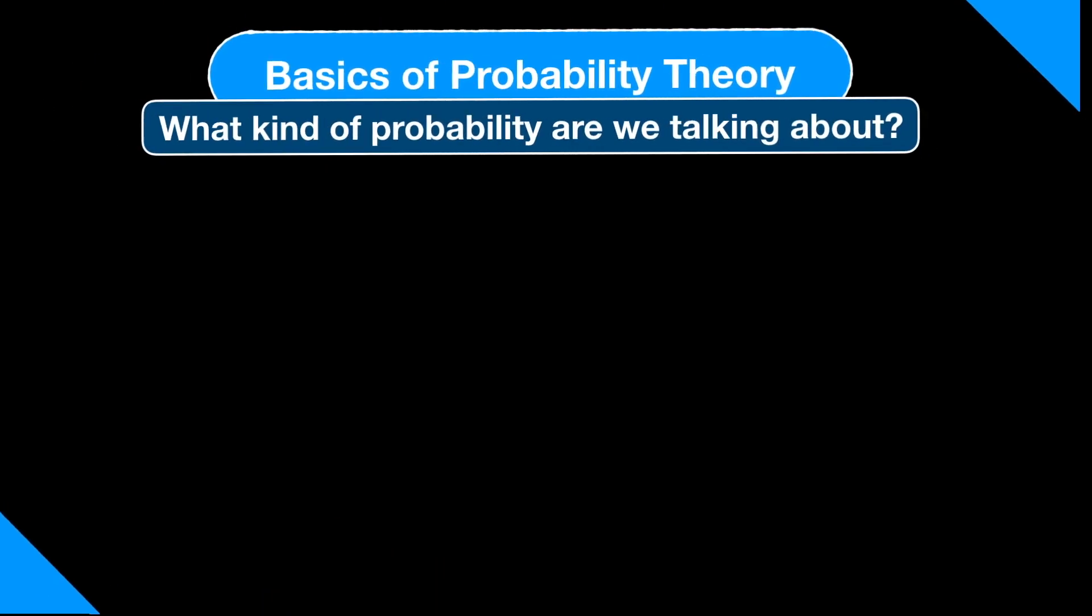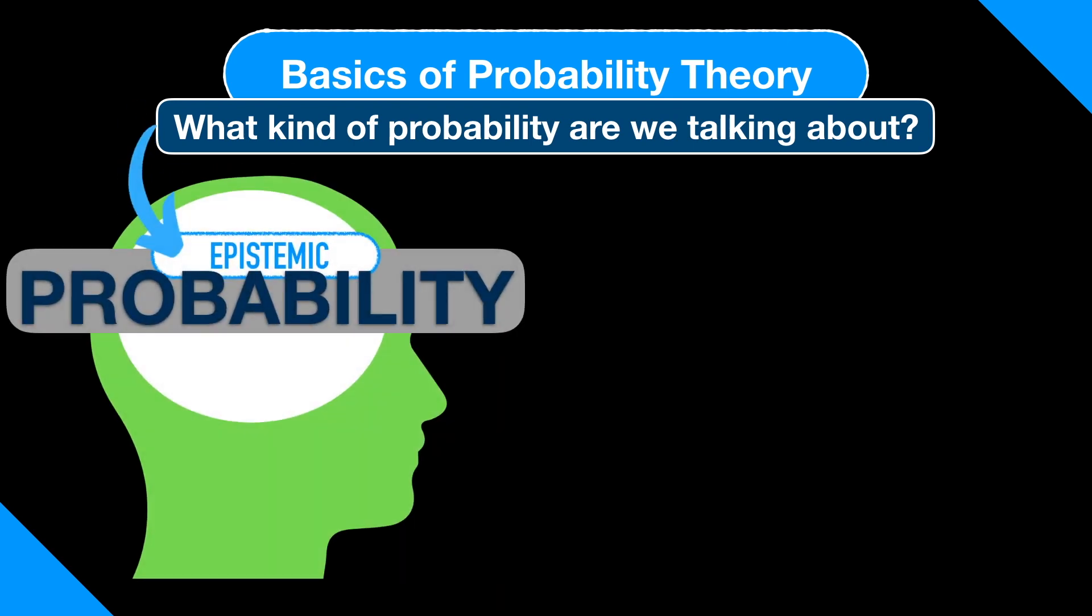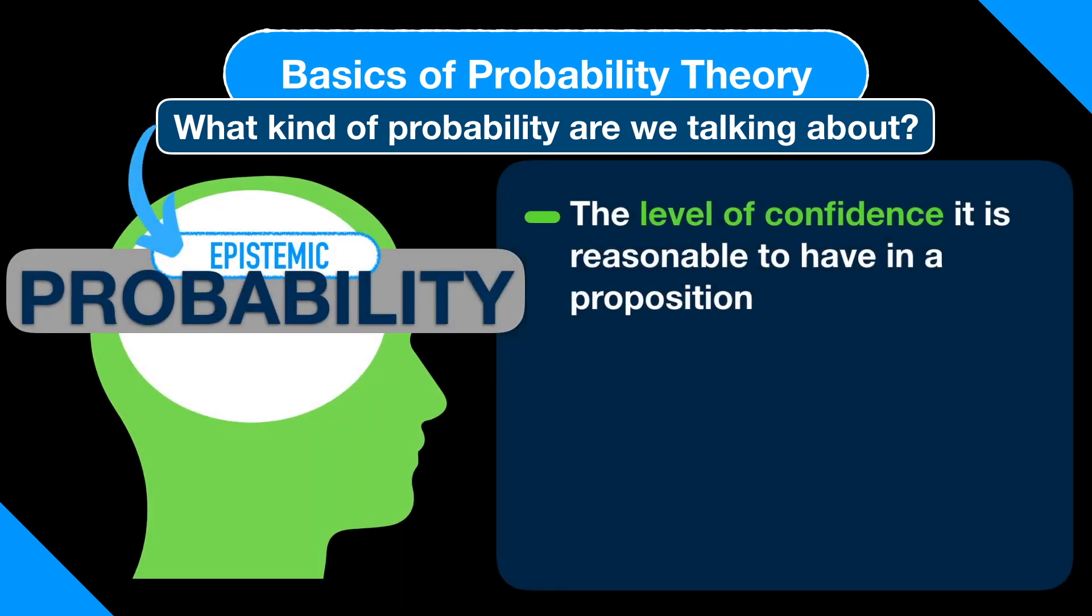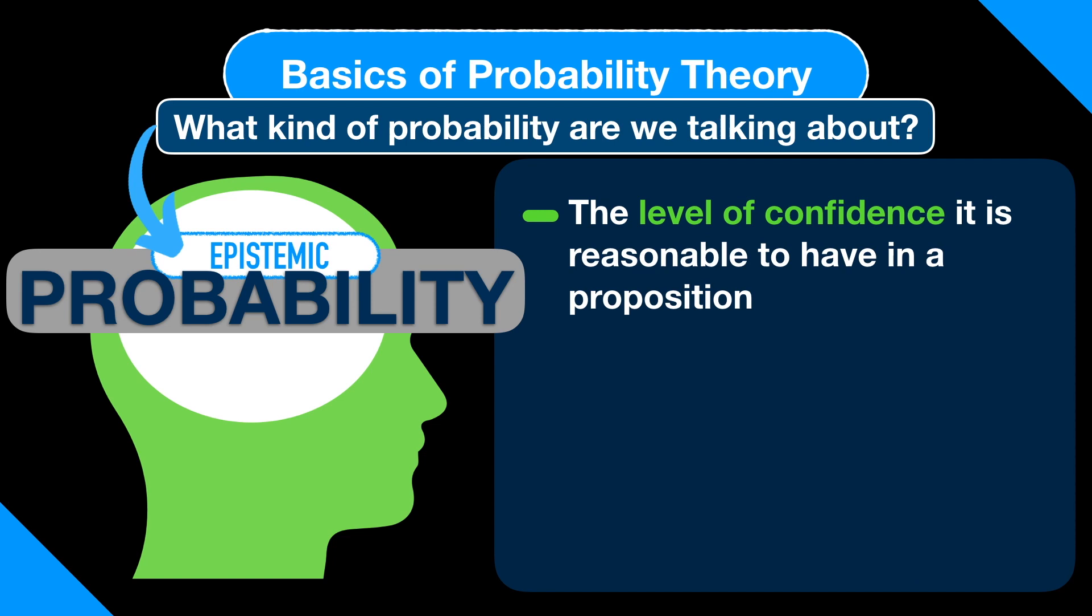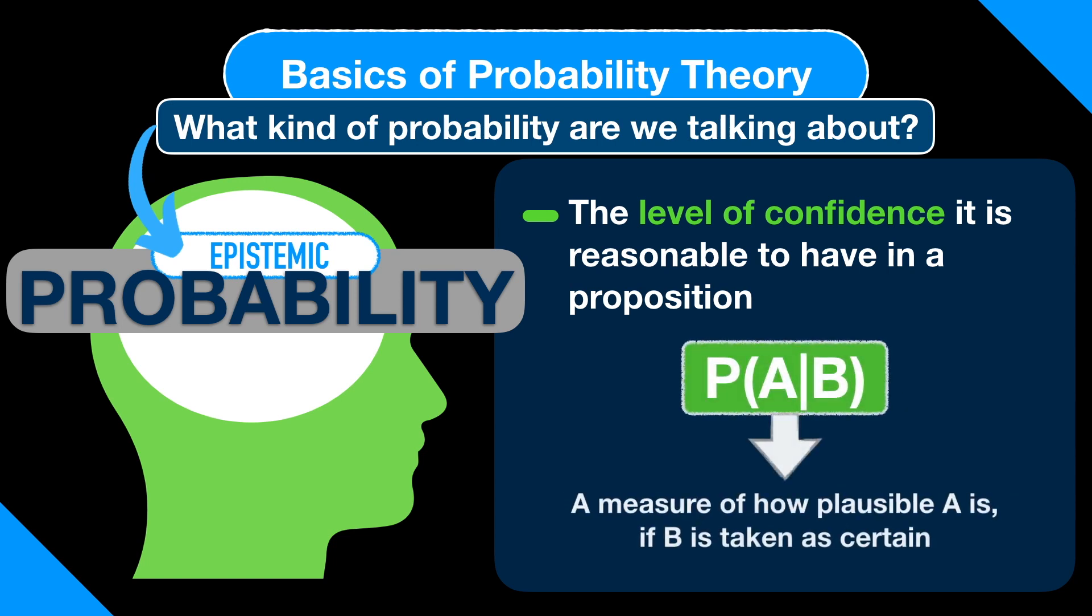Now, what kind of probability are we talking about in this context? It's called epistemic probability. By that, I mean the level of confidence it's reasonable to have in a proposition. The epistemic probability of a proposition A given another proposition B is a measure of how plausible A is if B is taken as certain. This is important because we want to know how to determine the level of confidence we should have in a hypothesis given or conditioned upon some piece of evidence.